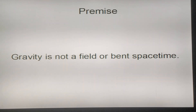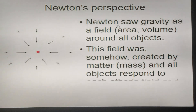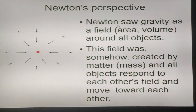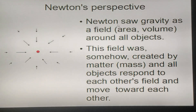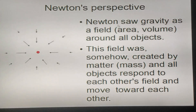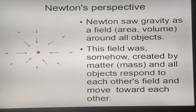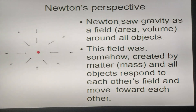The premise of this presentation is that gravity is not a field or bent spacetime. We have two major thoughts on gravity. One is Newton's idea. Newton saw gravity as a field, an area, a volume around all objects. This field was somehow created by matter, mass, and all objects respond to each other's field and move toward each other.